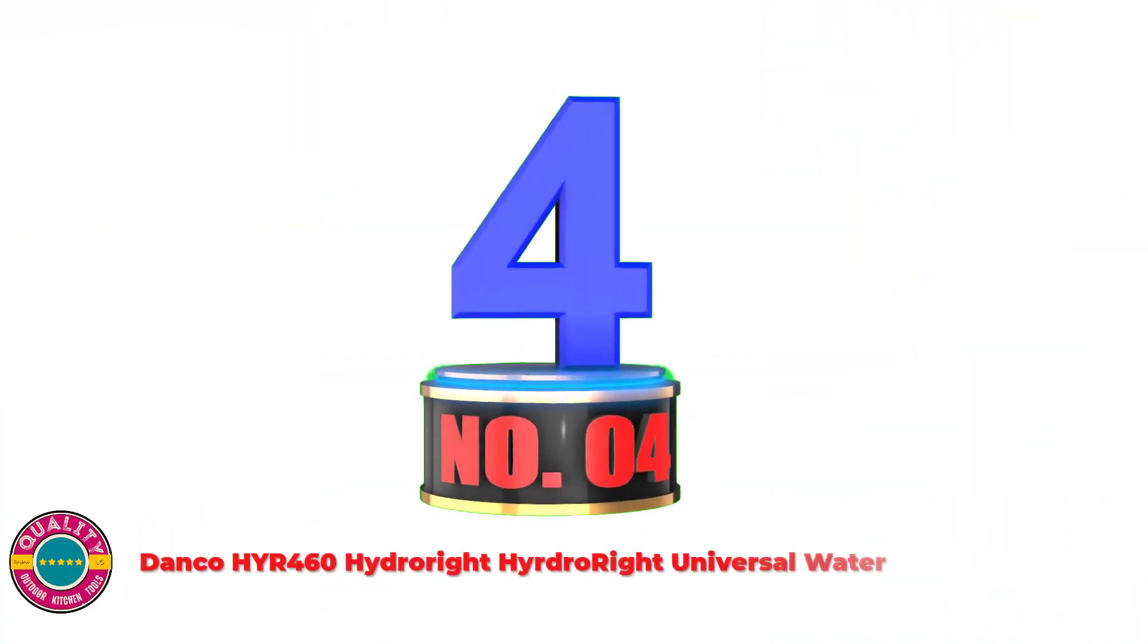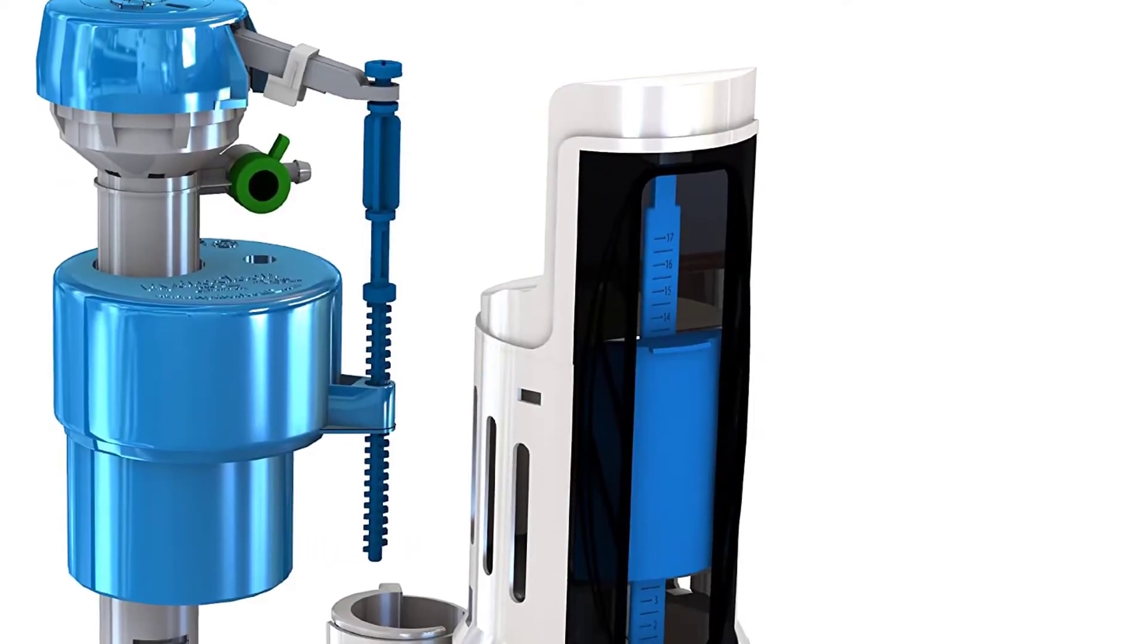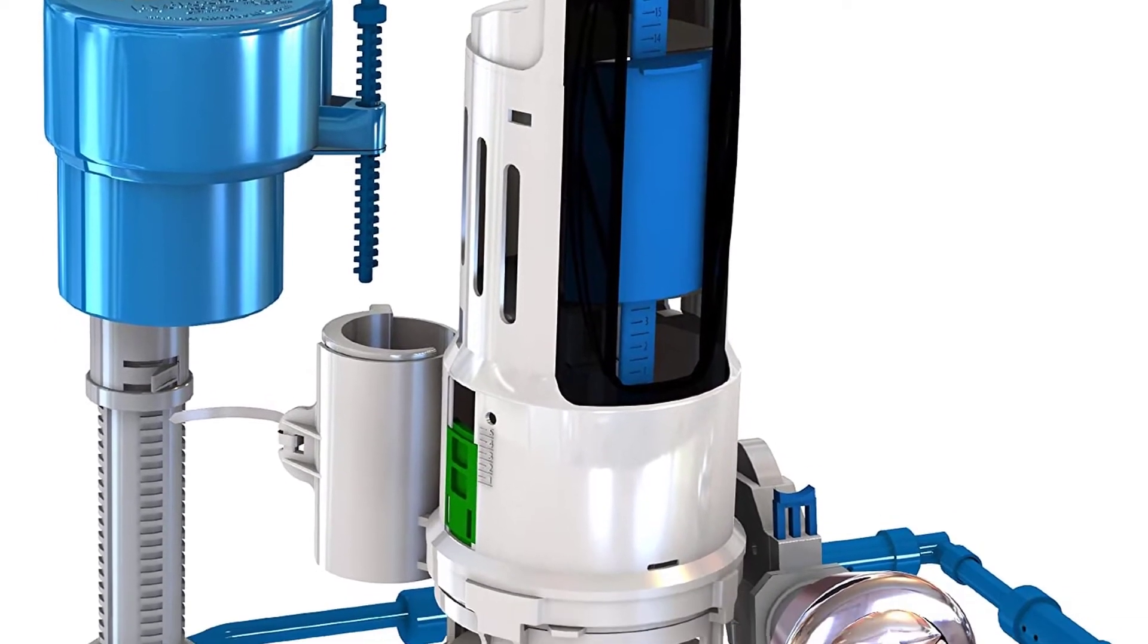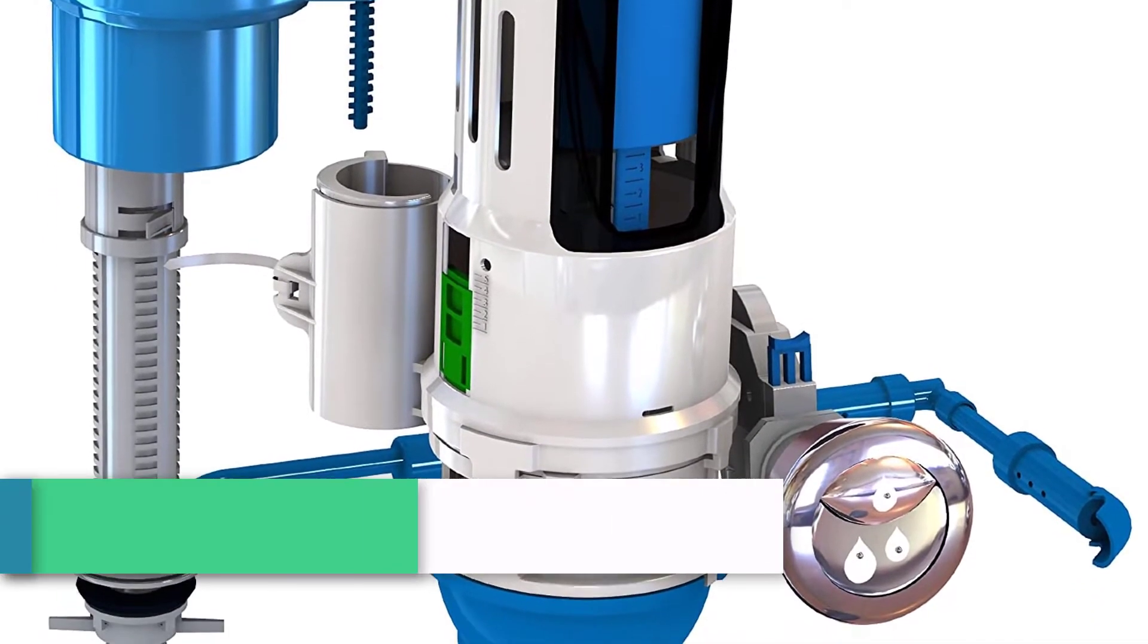Number 4. Danko HYR 460 Hydrite Hydro-Rite Universal Water. Easily converts a standard toilet into a dual flush toilet that saves water by reducing the amount of water used with each flush.